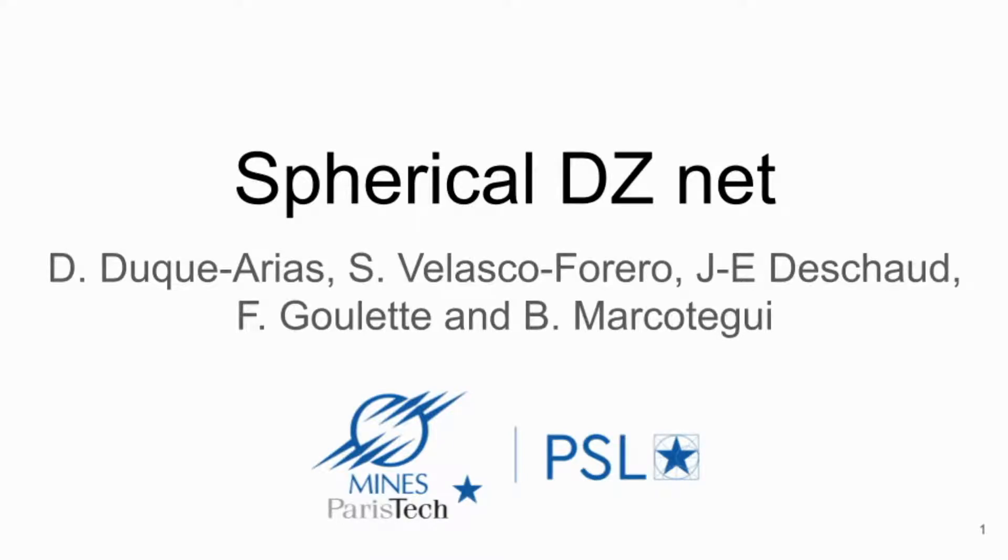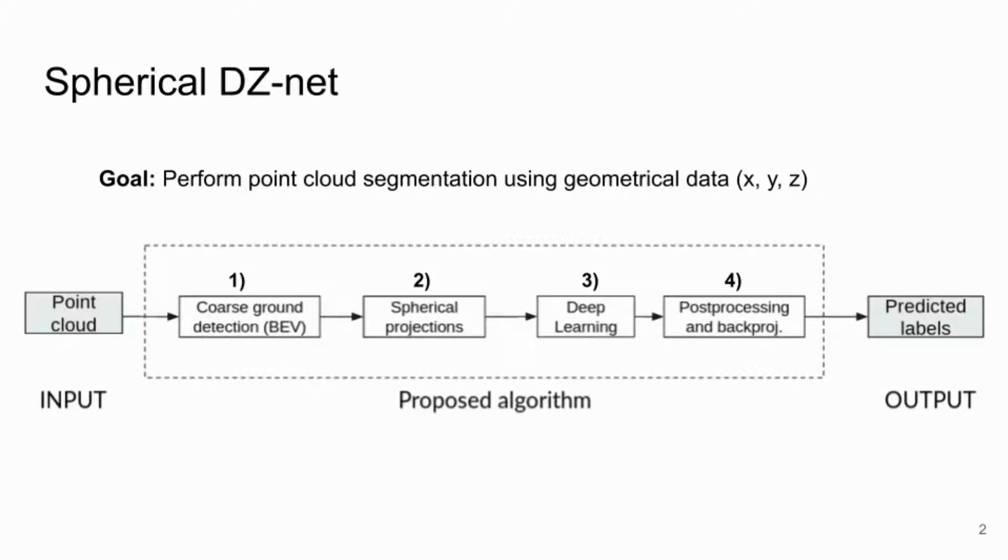We are part of PSL Research University from Paris in France and we proposed an algorithm called Spherical DC Net. Semantic segmentation is performed for point clouds using only geometrical data. The process relies on 2D projections, spherical projections and bird's-eye view. The proposed algorithm is divided into four steps.